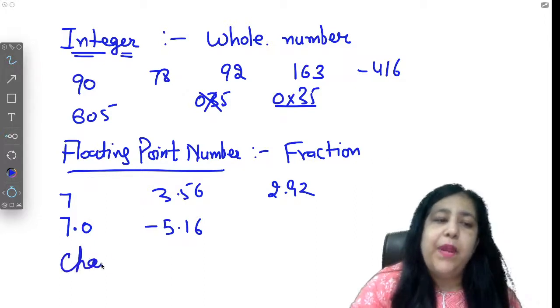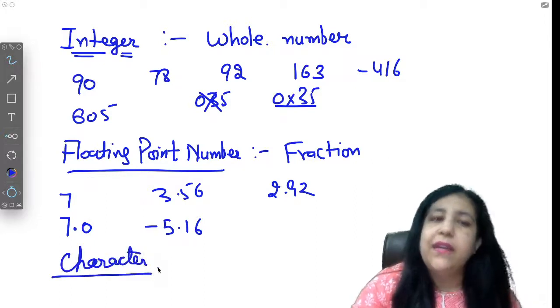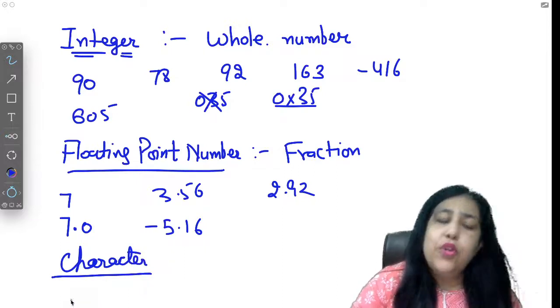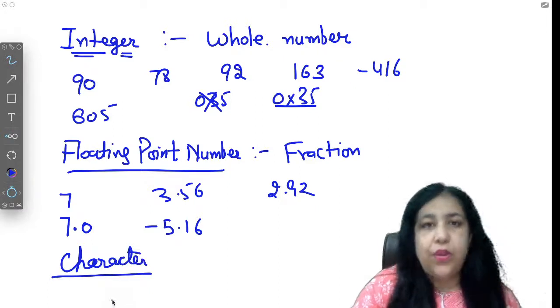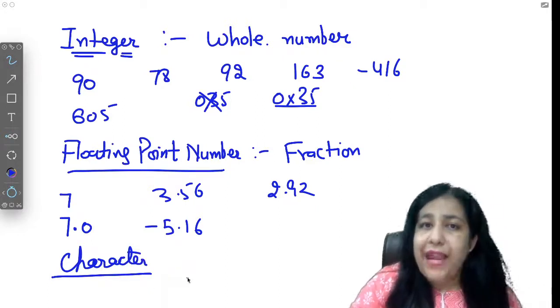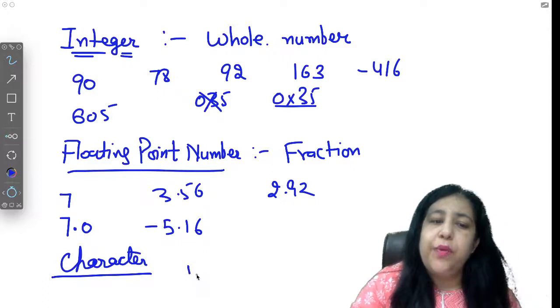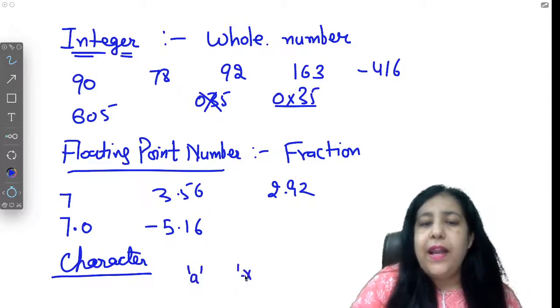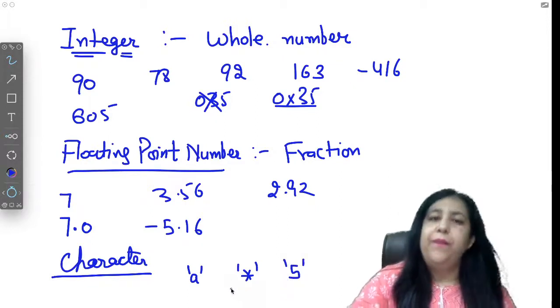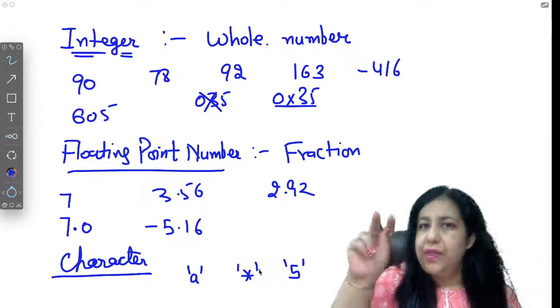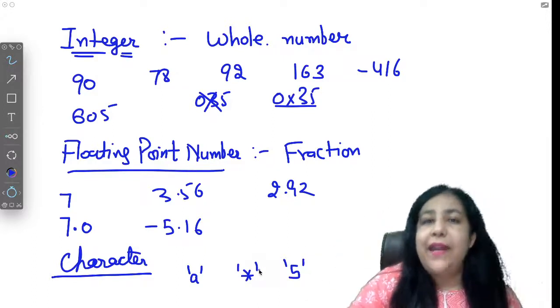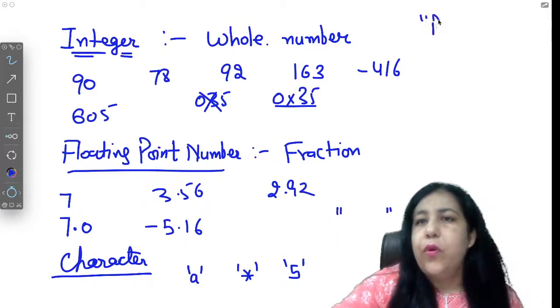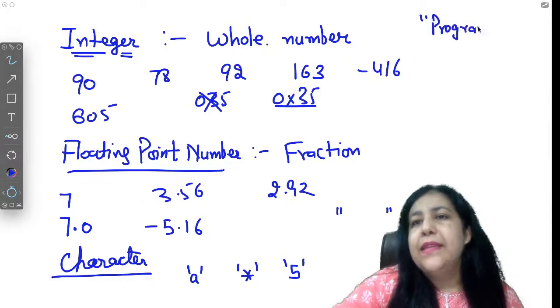The third thing is character. I showed you the character set in the previous class - which characters you can use in a C program. Whatever character is on your keyboard that can be printed, can be used. But when you use it as a character value, make sure you put it in single quotes. If you write 5 normally, it's an integer, but if 5 is in single quotes, it becomes a character. Every character must be enclosed in single quotes to specify that it's a character. More than one character we write in double quotes and that is taken as a string.